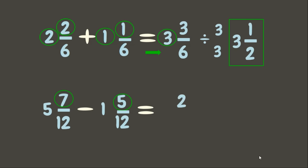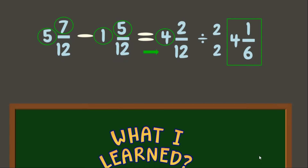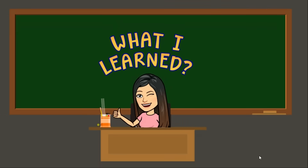Let's try another one. Seven-twelfths minus five-twelfths: copy the common denominator twelve. Subtract the whole numbers: five minus one is four. Simplify the fraction, copy the whole number. Our final answer is four and one-sixth. Wonderful job, students!